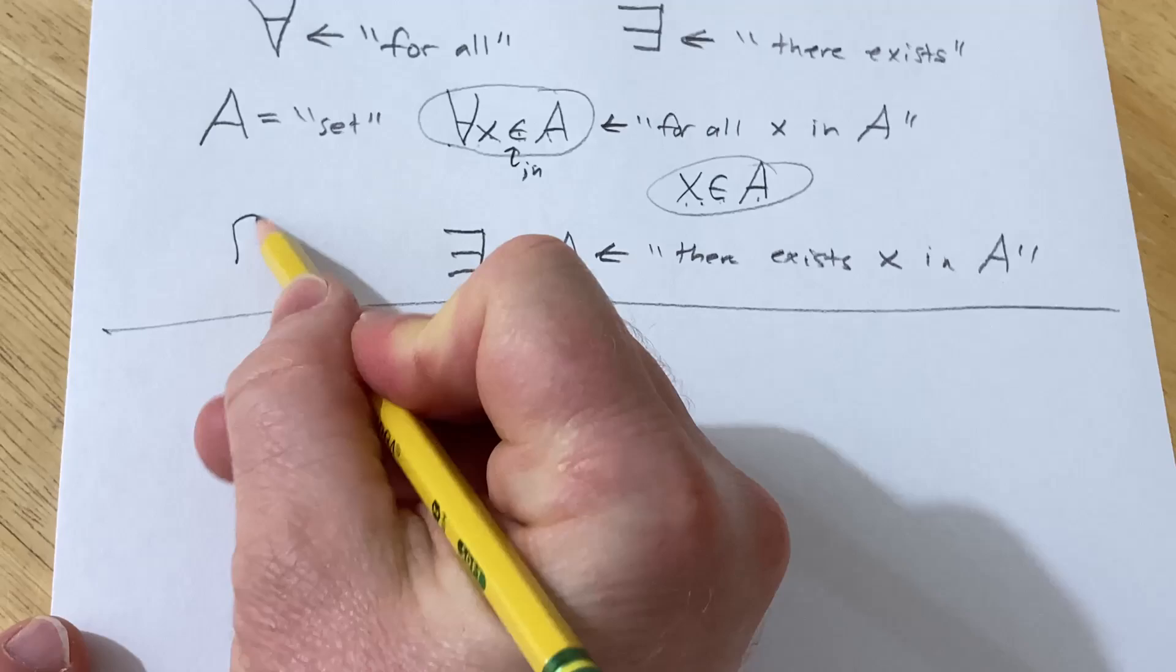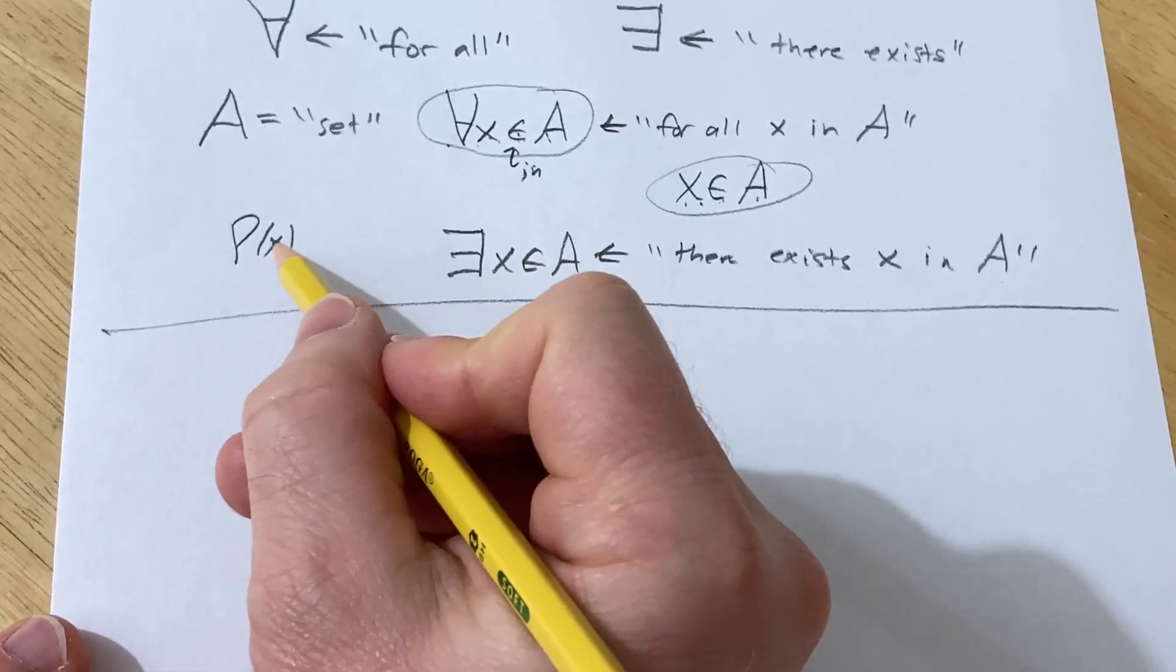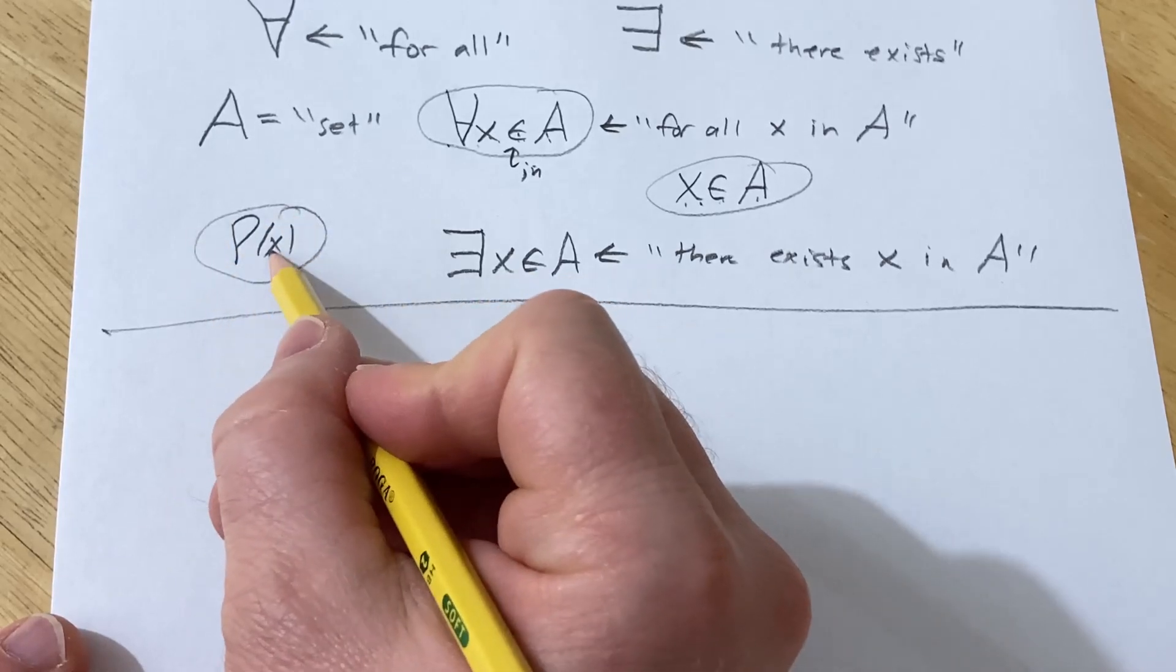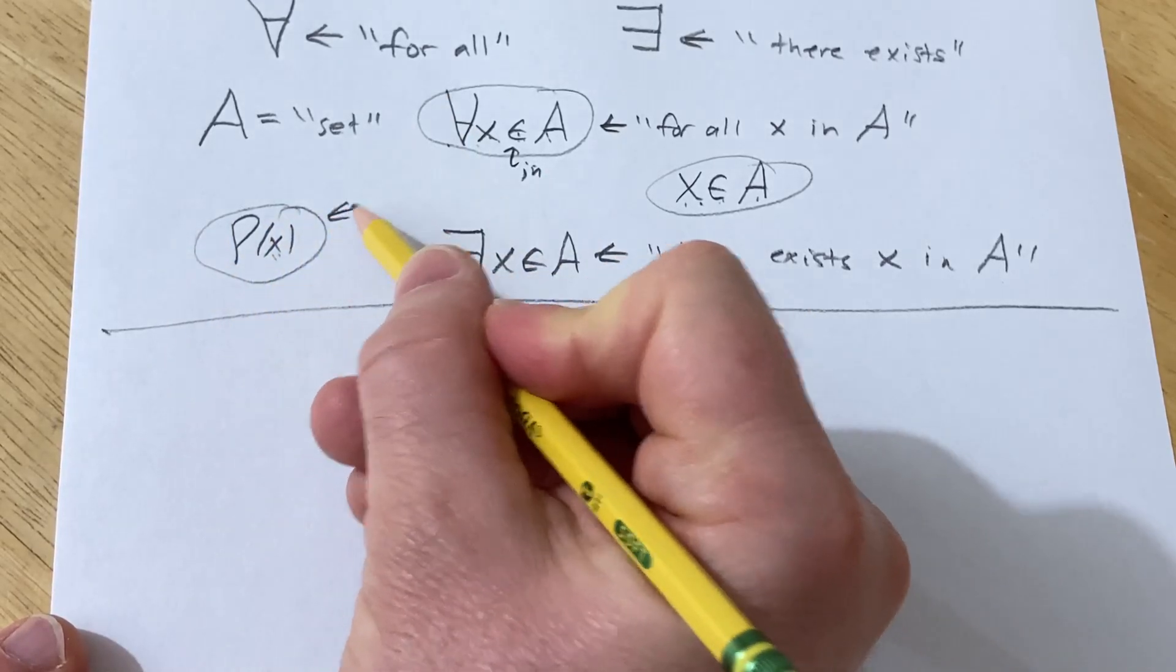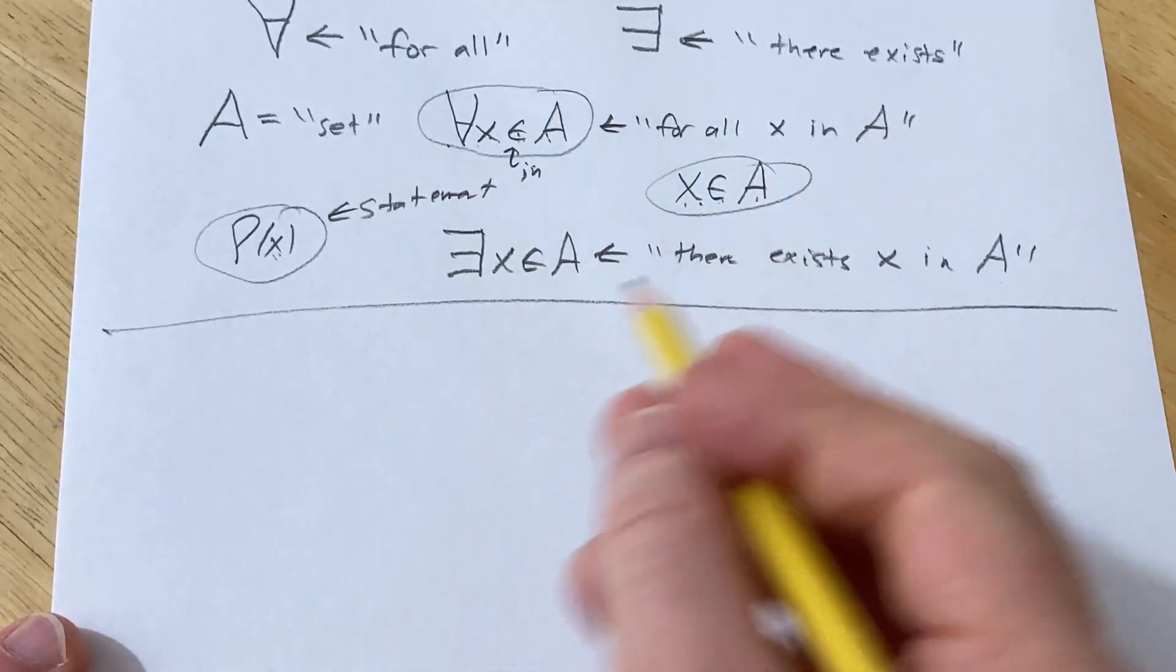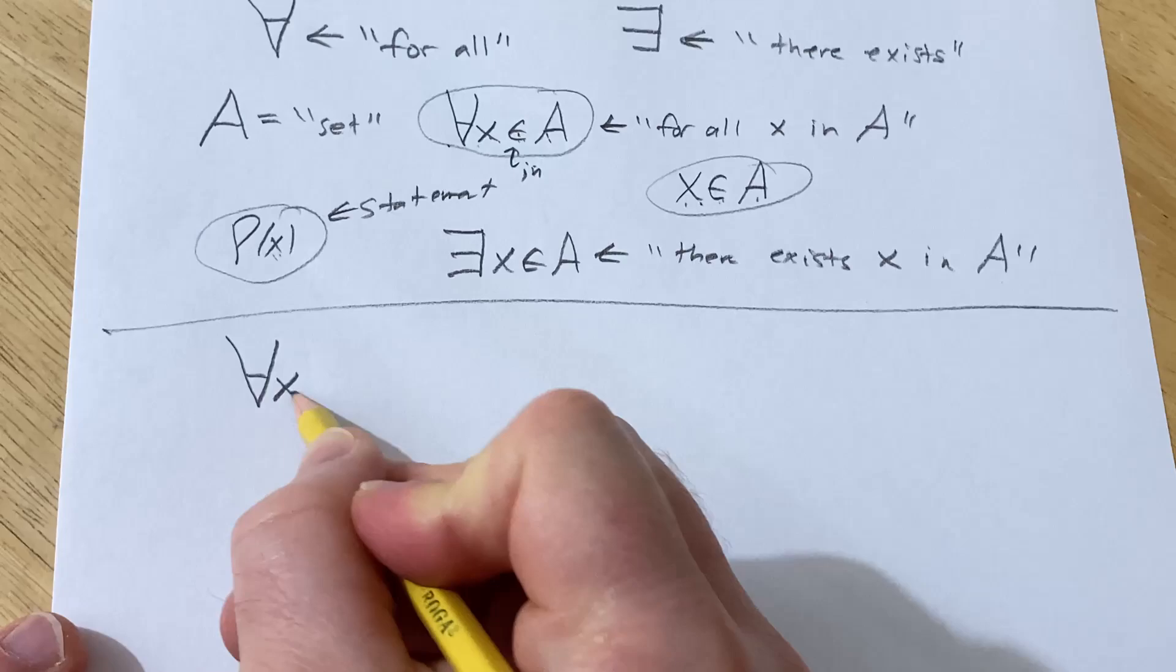By the way, if someone writes P(x), this is a statement. We don't know if it's true. This is a statement that depends on X. So this is going to be a statement.